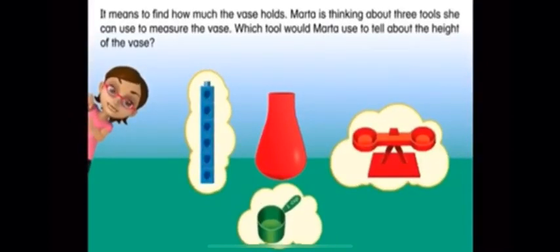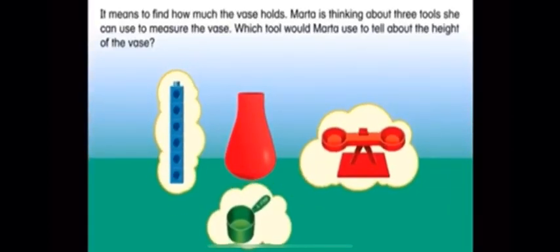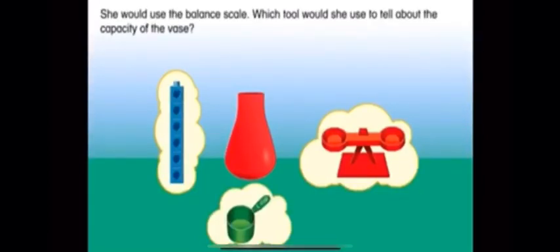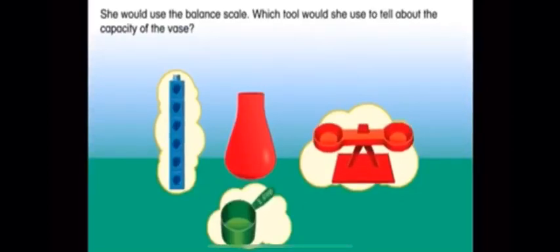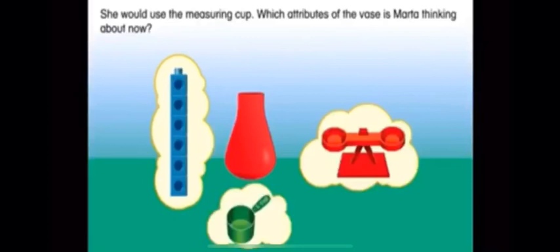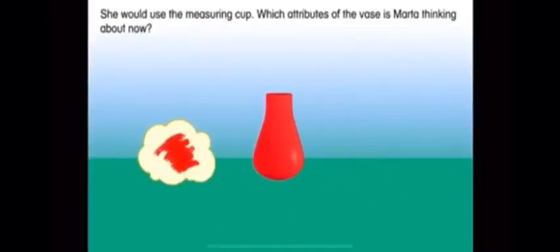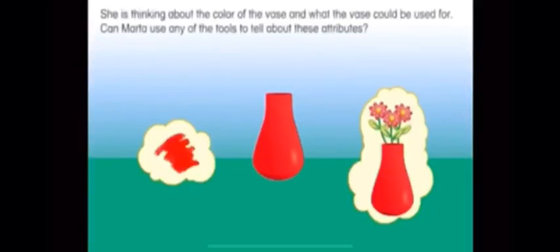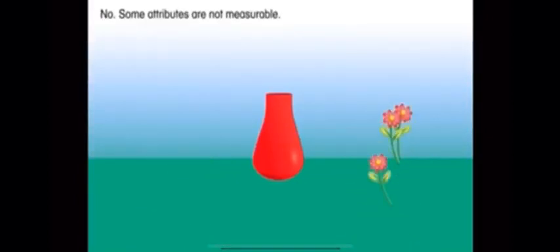Marta is thinking about three tools she can use to measure the vase. Which tool would Marta use to tell about the height of the vase? She would use cubes. Which tool would she use to tell about the weight? She would use the balance scale. Which tool for capacity? She would use the measuring cup. Now, which attributes is Marta thinking about? She is thinking about the color of the vase and what the vase could be used for. Can Marta use any of the tools to tell about these attributes? No — some attributes are not measurable.